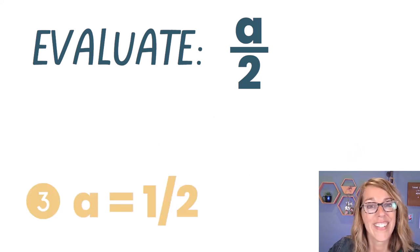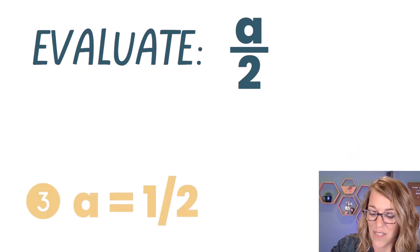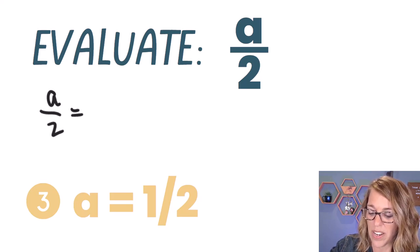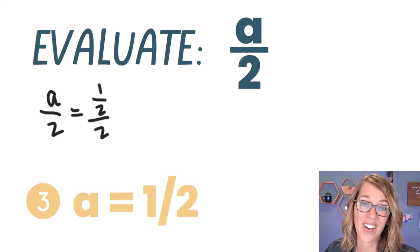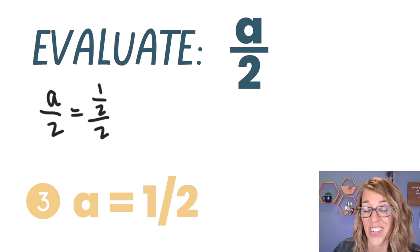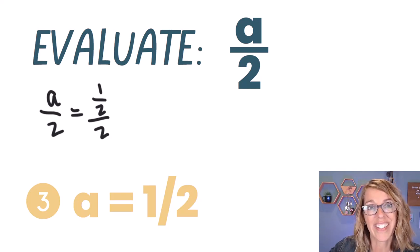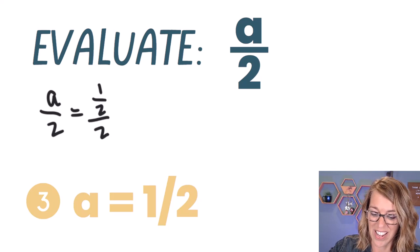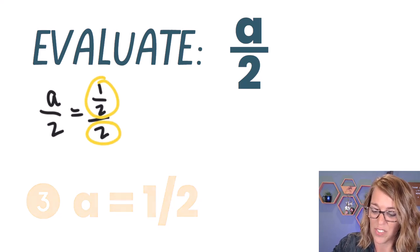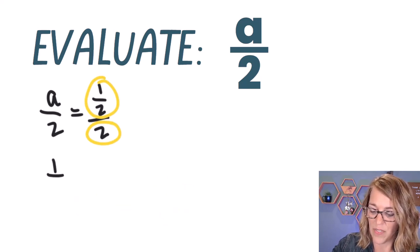We've got one more. Let's do this last one together. So I've got a is equal to one half. So I get a over two. I'm going to replace that a with a one half. But I get this funky fraction; we actually call this a complex fraction because there's a fraction inside of it. Now I am going to use that division notation again. So I can think of this as 1/2 divided by two. Let's write that out. So I have 1/2 divided by two.